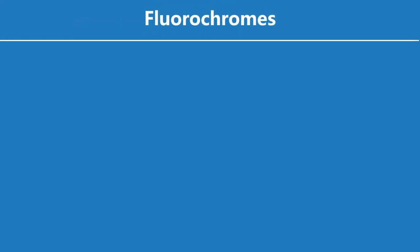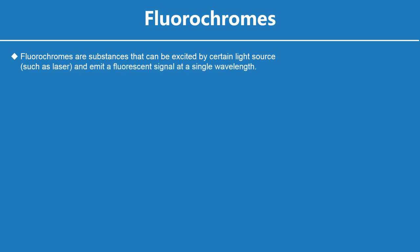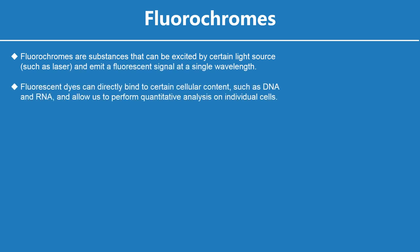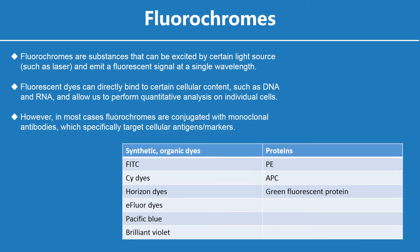Fluorochromes are substances that can be excited by a light source and emit a fluorescent signal at a single wavelength. Fluorescent dyes can directly bind to cellular content such as DNA and RNA, allowing quantitative analysis on individual cells. However, in most cases fluorochromes are conjugated with monoclonal antibodies which specifically target cellular antigens or markers.